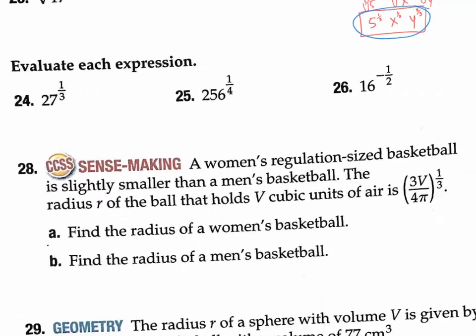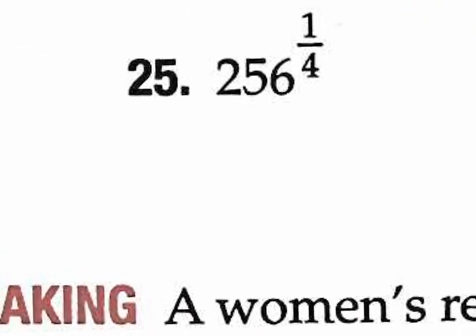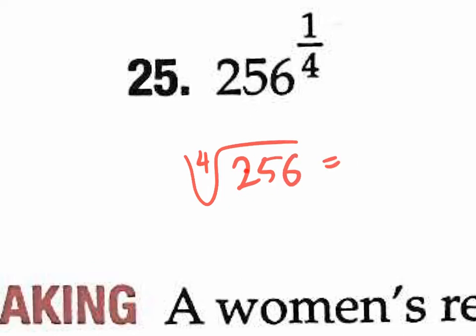Let's do number 25. They want you to simplify 256 to the power of 1/4, which is really the fourth root of 256. What number multiplied by itself four times gives you 256? Let's try 4: 4 times 4 is 16, times 4 is 64, times 4 is 256. Yes — 4 is the answer. A calculator will also do it for you.